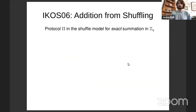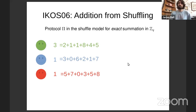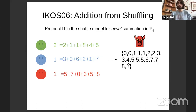The protocol we're going to use isn't new — it appeared in a 2006 paper by Ishai et al called Cryptography from Anonymity. We have our users, each one has a number, and we're going to add these numbers up modulo some value. They start by additively sharing their values into a bunch of shares — six in this case — and then shove all of those shares into the hat, which gets shaken around. The adversary receives effectively the multiset of additive shares and then takes all of those shares, adds them together, and gets the answer.